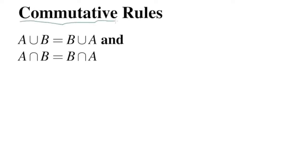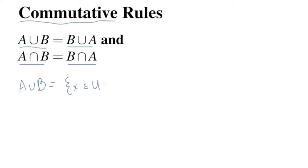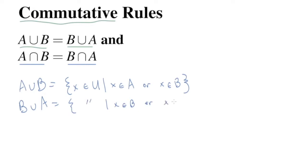The first set identity rule I want to look at is called the commutative rules. A union B is the same set as B union A, and similarly A intersect B is the same thing as B intersect A. Let's figure out why these equalities hold. A union B means the set of things x such that x is in A or x is in B. If we define B union A, it's really just the same thing - the set of things such that x is in B or x is in A. These two statements are just the same.